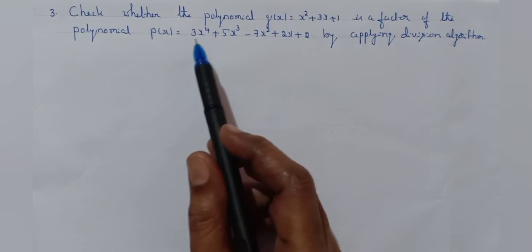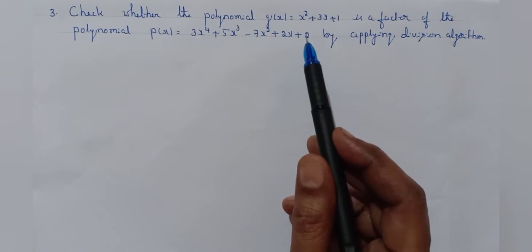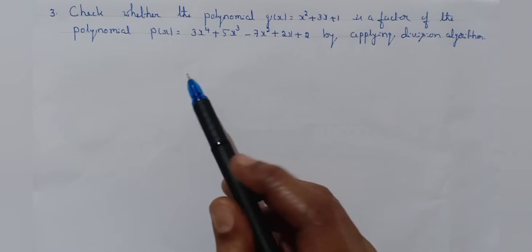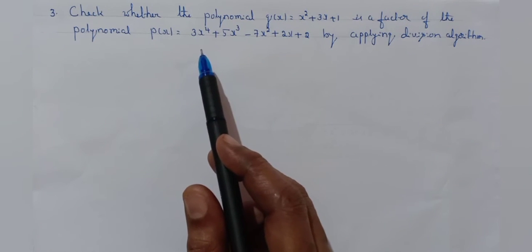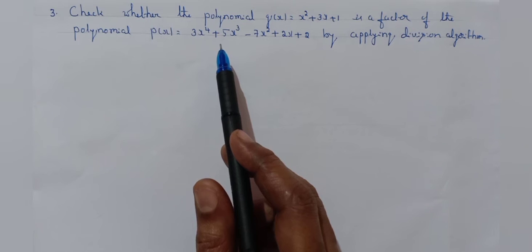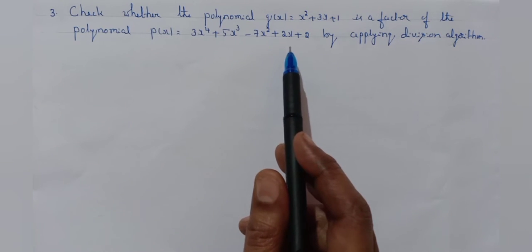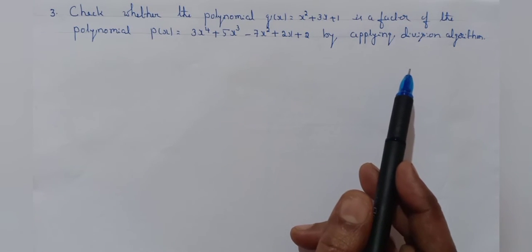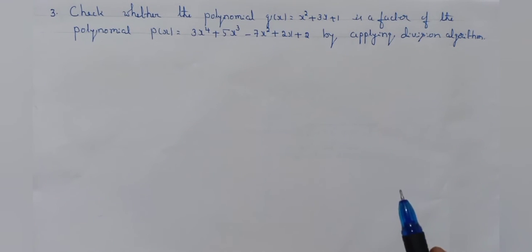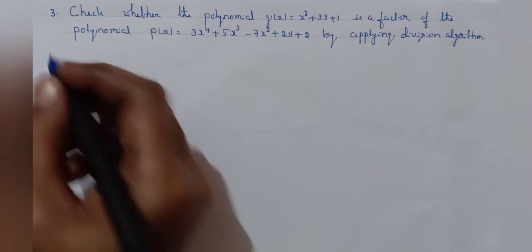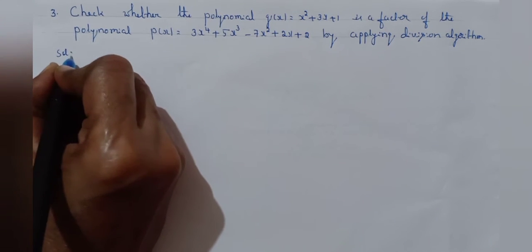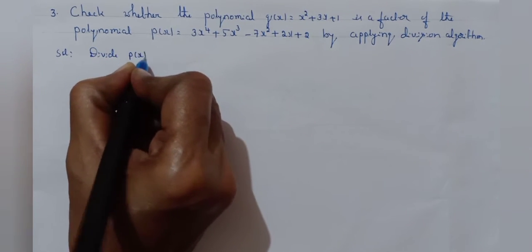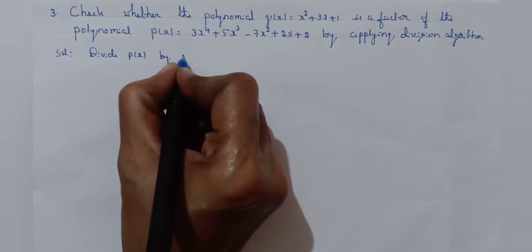Next question: Check whether the polynomial g of x equal to x square plus 3x plus 1 is a factor of the polynomial p of x equal to 3x to the power of 4 plus 5x cube minus 7x square plus 2x plus 2, by applying the division algorithm. Now divide p of x by g of x.